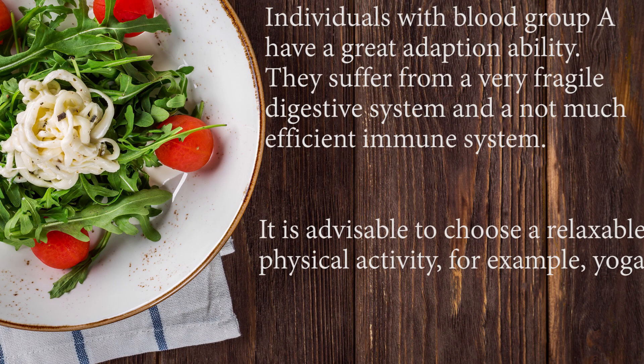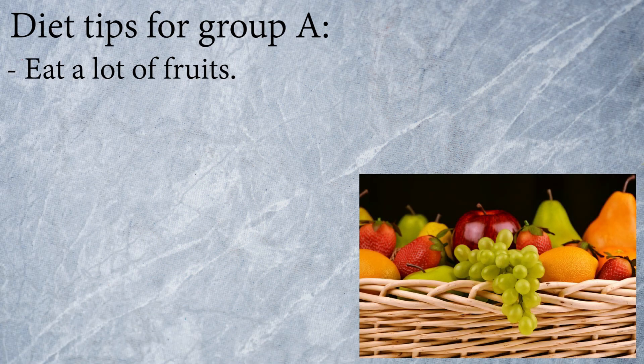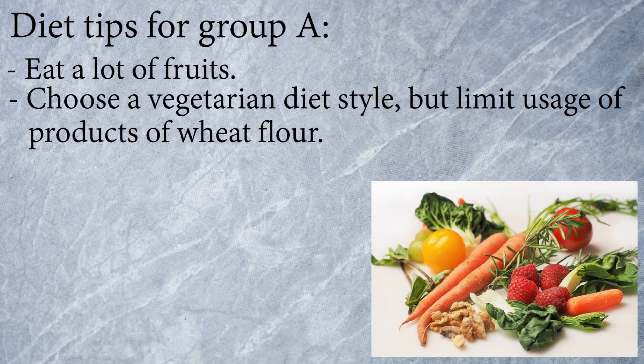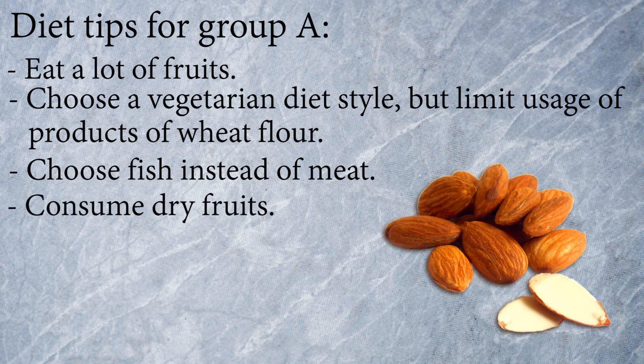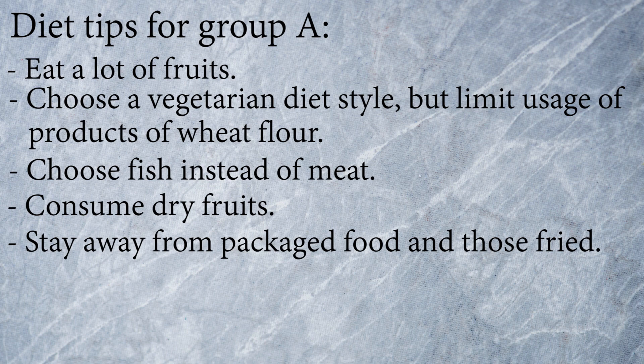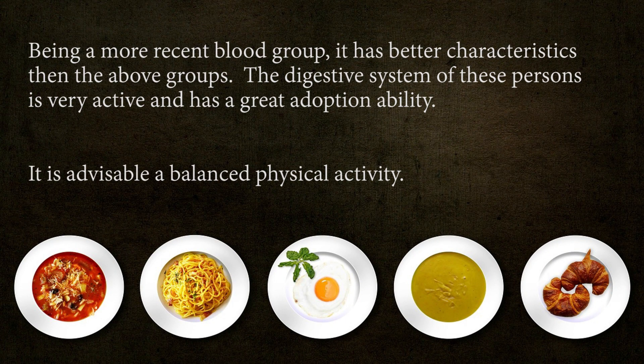Group A individuals have great adaptation ability but suffer from a fragile digestive system and a less efficient immune system. Relaxing physical activity such as yoga is advisable. Diet tips: eat a lot of fruits; choose a vegetarian diet style; limit wheat flour products; choose fish instead of meat; consume dry fruits; and stay away from packaged and fried foods.